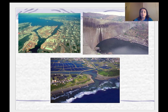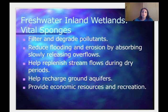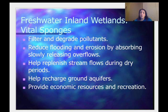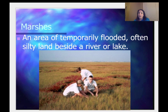Some of the things that cycle through freshwater ecosystems or wetlands include carbon, nitrogen, sulfur — used for agriculture and a limiting nutrient — as well as O2 content and temperature, and access to photosynthesis, which can be limited in shady areas like swamps. Here's an example of a marsh — it's an area that's temporarily flooded, often silty land beside a river or lake.